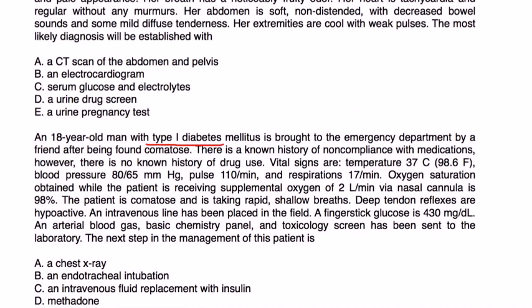And finally, 18-year-old man with type 1 diabetes brought to the emergency department by a friend after being found comatose. He has a well-known history of non-compliance with medications. However, there's no known history of drug use. Vital signs are temperature 98, blood pressure 80 over 65, pulse 110, respirations 17, oxygen saturation 98% on 2 liters of oxygen. Patient is comatose and taking rapid shallow breaths. Deep tendon reflexes are hypoactive. An IV line has been placed in the field. Finger stick glucose is 430. ABG basic chem panel and toxicology screen has been sent to the lab. Next step in management is,